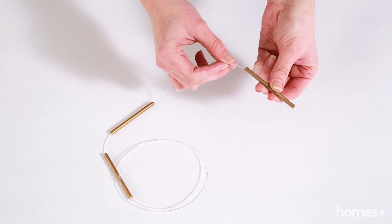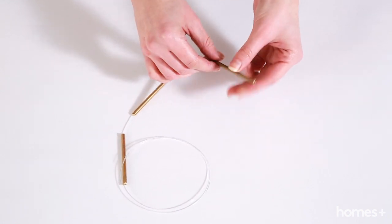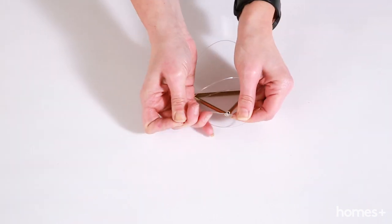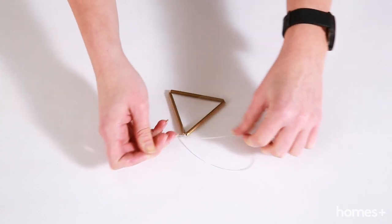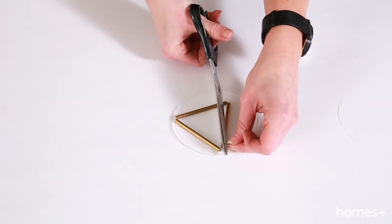Cut a strand of fishing twine and thread it through 3 of the smaller pieces of tubing. Tighten so that the gold tubes form a little triangle and then secure with a knot. Cut off any excess twine.